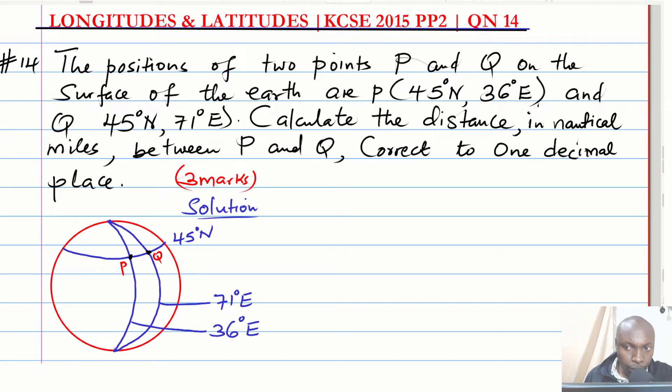The positions of two points P and Q on the surface of the Earth are P 45 degrees north, 36 degrees east, and Q 45 degrees north, 71 degrees east. Calculate the distance in nautical miles between P and Q, correct to one decimal place.